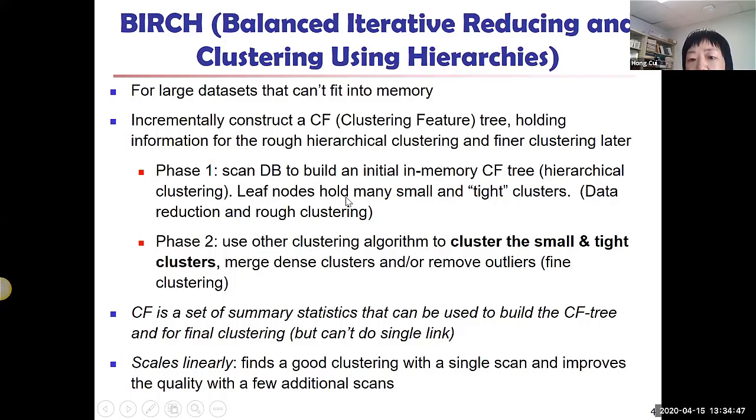Not only that, the CF tree at the leaf node holds many very small and very tight clusters. This is a data reduction idea. We build very tight clusters, and each cluster can be seen as data points for the second phase. In phase two, everything is in memory—the CF tree and all those small tight clusters. At this point, any other clustering algorithm we have discussed would work.